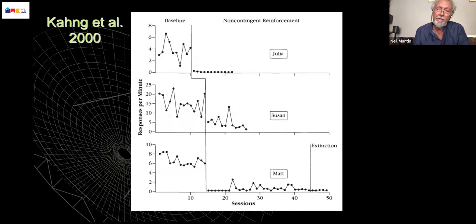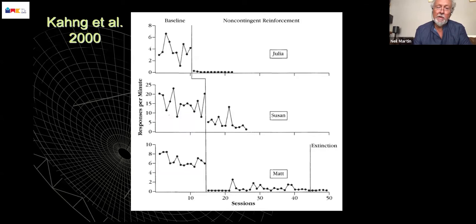Nothing else happened in this study. One of the big advantages of using non-contingent reinforcement is that it's such an easy thing to do, provided you identify stimuli with known reinforcing properties. This is what can happen if you simply provide access to stimuli with known reinforcement properties on a fixed time interval, and you see decreases measured by responses per minute in the problem behaviour of three individuals. It can be a pretty powerful strategy, even though it's a really easy thing to do.